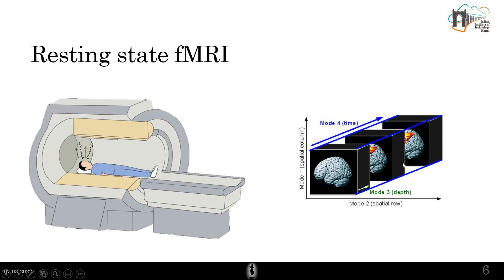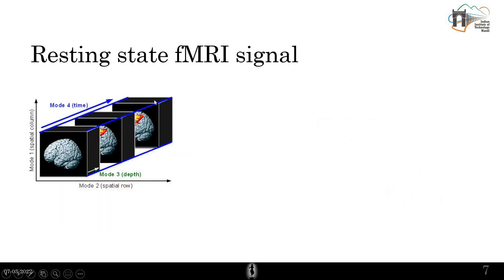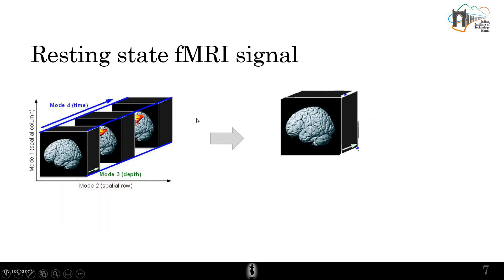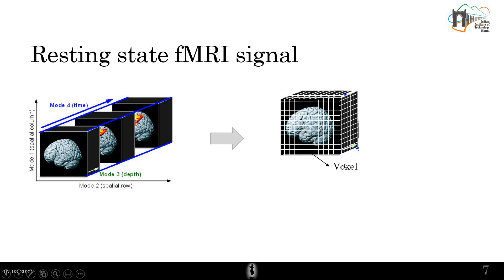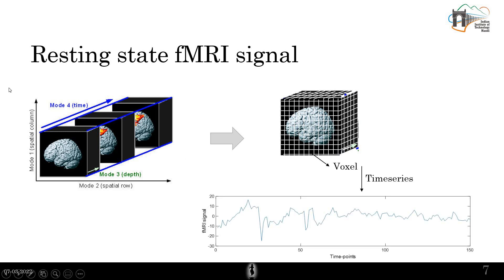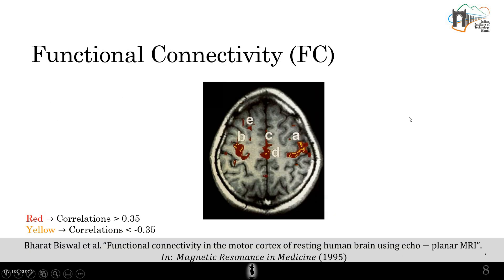The brain is 3D and we take the brain signal across time, giving us brain volumes across time — hence the four-dimensional signal. This can be represented as one three-dimensional volume divided into voxels. A voxel is essentially a volumetric pixel — a pixel having a volume. Each voxel has a time series, and this is how we represent the fMRI signal.